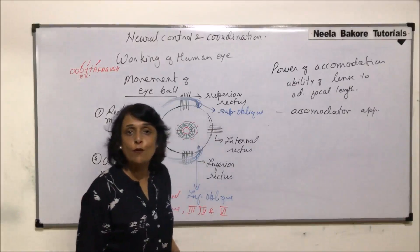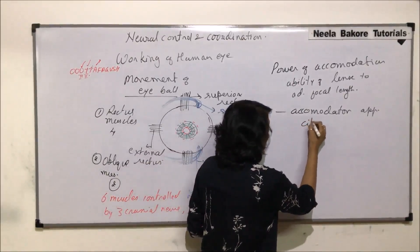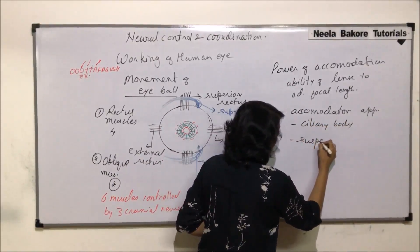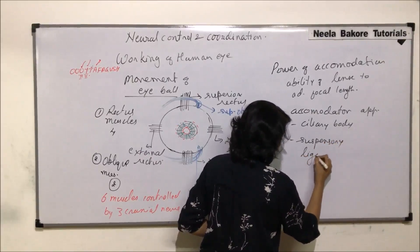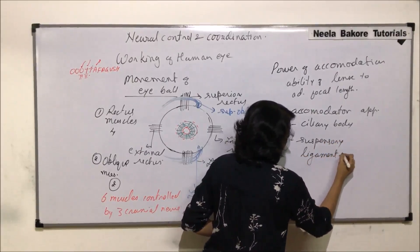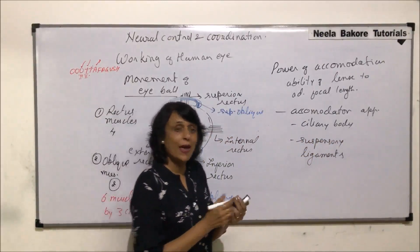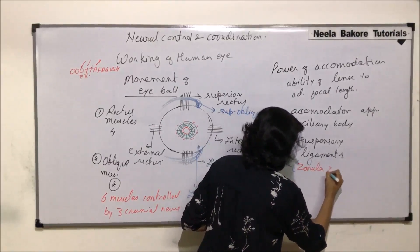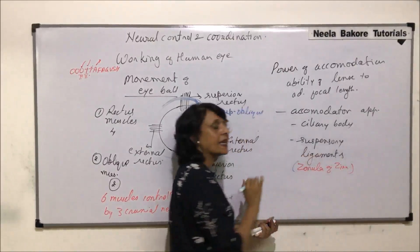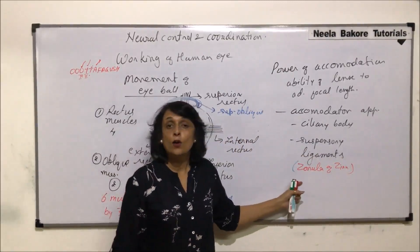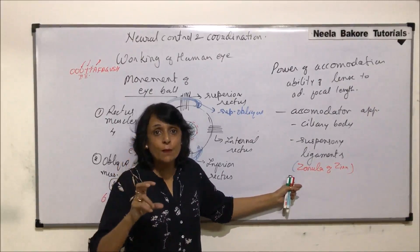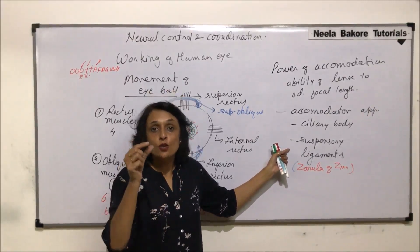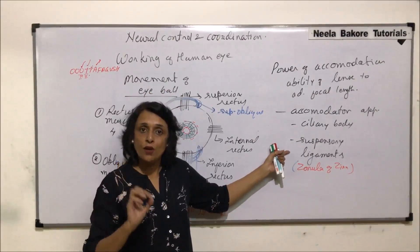There is a structure called the accommodation apparatus. The accommodation apparatus of our eye comprises two things: the ciliary body and the suspensory ligaments. Suspensory ligaments are also known as the zonula of Zinn. These two structures help in the adjustment of the focal length of the lens so that every time the image is formed on the retina.